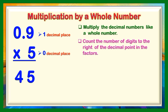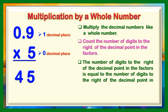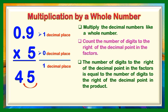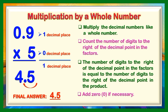In our multiplier, we have 0 decimal places. The third step is to count the number of digits to the right of the decimal point in the factors, and this should be equal to the number of digits to the right of the decimal point in the product. So let us get the total number of decimal places in our factors: we will have 1 decimal place. In this case, we will have only 1 decimal place in our product. The decimal point is located after the digit 5, so we're going to move the decimal point one place to the left, and we will put the decimal point between 4 and 5. The 4th step is to add 0 if necessary, but in this case we will no longer need to add 0. Therefore, the final answer is 4 and 5 tenths.